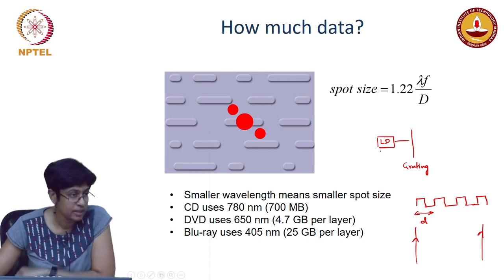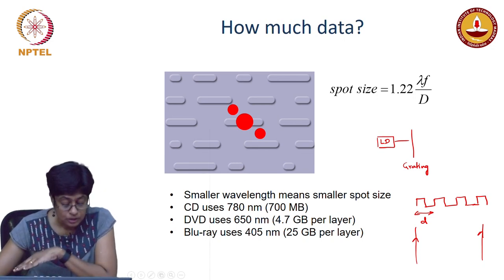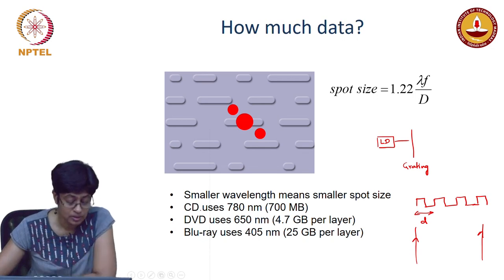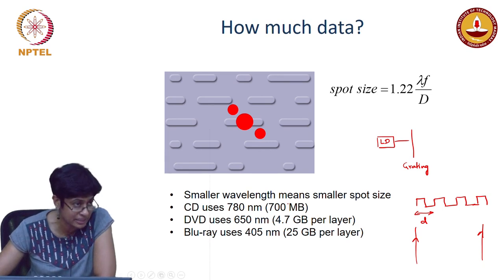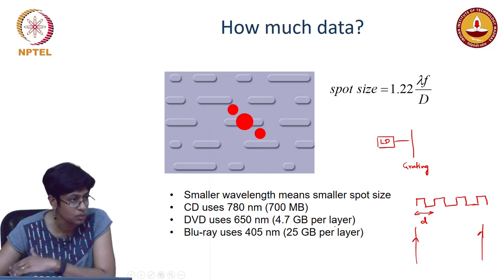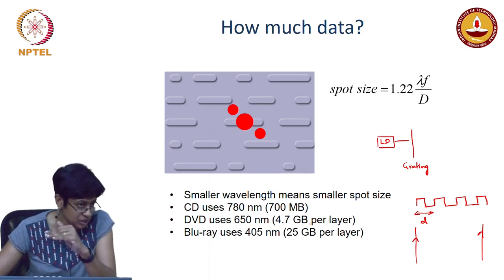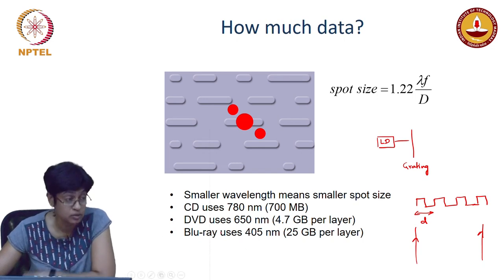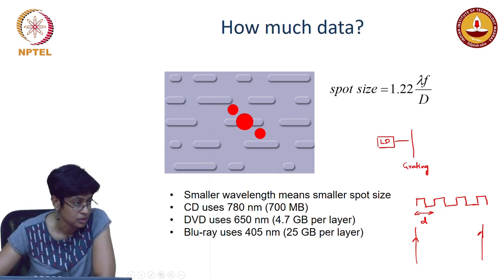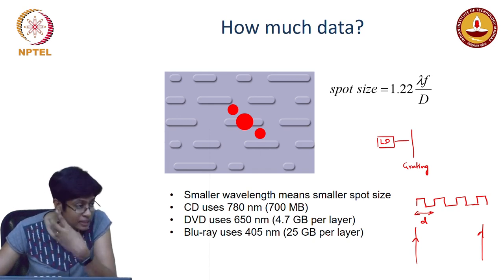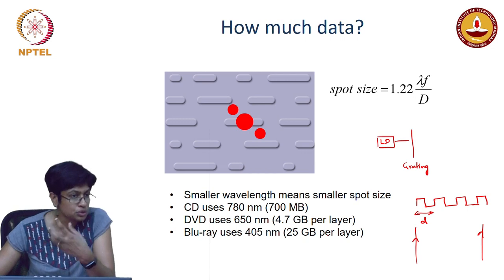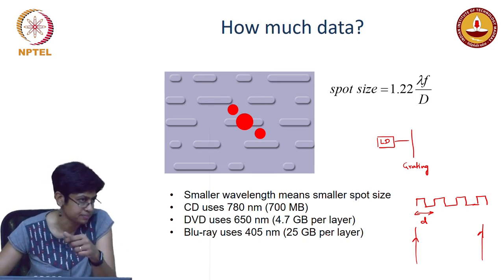Smaller wavelength gives you smaller spot size. The CD started with 780 nanometers and the original disks could store 700 MB of data. The DVD shifted to a slightly lower wavelength and could do 4.7 gigabytes of data per layer, with some DVDs having two layers. Blu-ray disks — so called because they shifted to blue light — achieved 25 gigabytes. So you could either put more information on the disk or the quality became better because you did not need as much compression on the data.